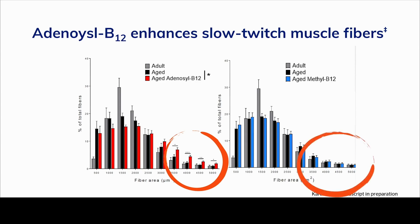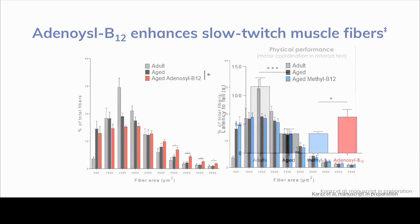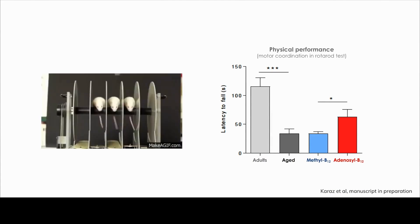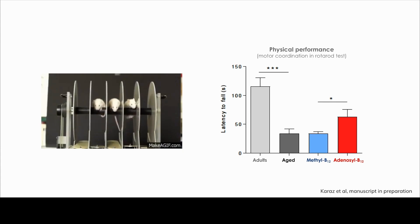Adenosylcobalamin also supported myelination of peripheral neurons. The slow-twitch muscle fibers studied are the types we rely on every day for walking and daily activities. Old rats given adenosylcobalamin had a greater proportion of larger slow-twitch muscle fibers than rats not receiving the supplement, and this benefit was not evident for methylcobalamin. Adenosylcobalamin was also more effective than methylcobalamin in supporting physical performance on the rotarod test, which measures balance, coordination, and stamina.